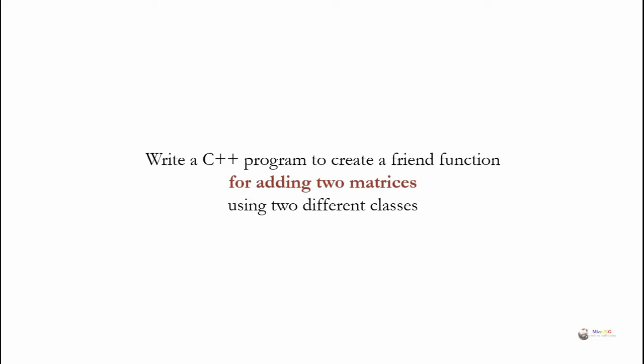Create a C++ program to create a friend function for adding two matrices using two different classes. In this program we are going to create two different classes for representing matrices, and by using a friend function we must be able to access the private data members of both classes to find the addition of two matrices.